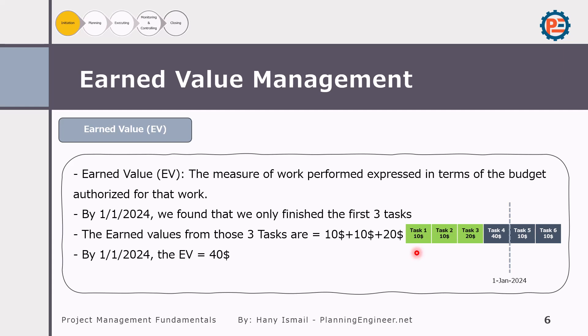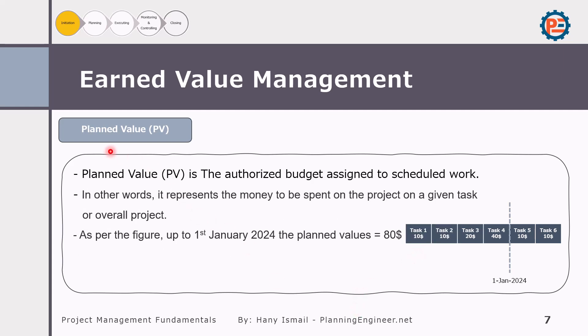During the course, we will understand EVM more deeply when we use Primavera and see how to display Earned Value, Planned Value, and all of these metrics. But for now, I'm giving you the basic information about EVM. Planned Value is the authorized budget assigned to scheduled work. It represents the money that should have been spent on the project up to a certain data date. For example, up to this date we should complete all these tasks, so the Planned Value is 10 plus 10 plus 20 plus 40, which equals 80 dollars.